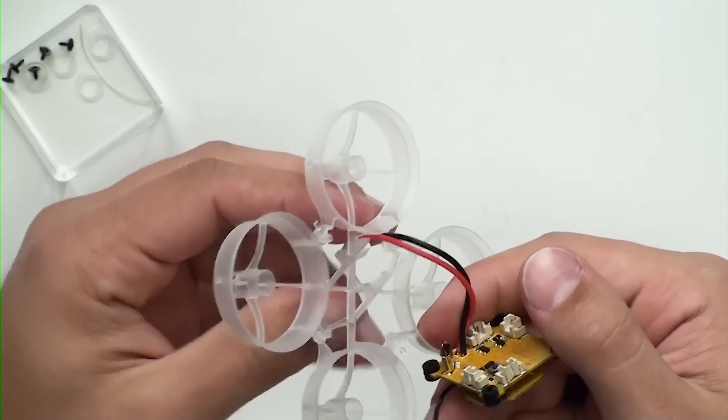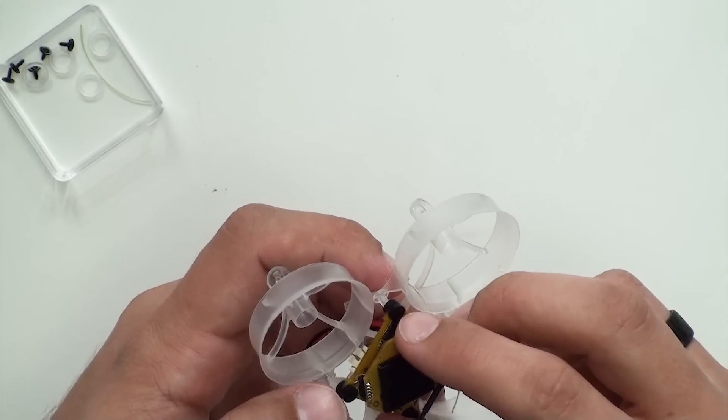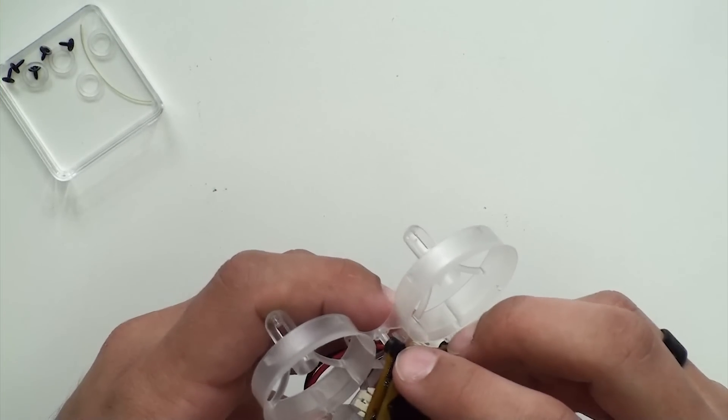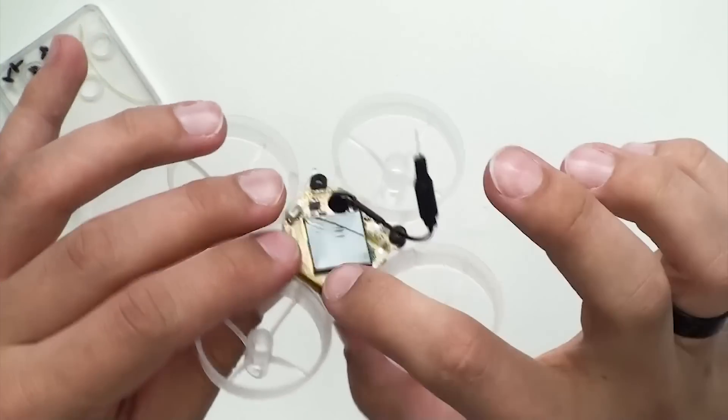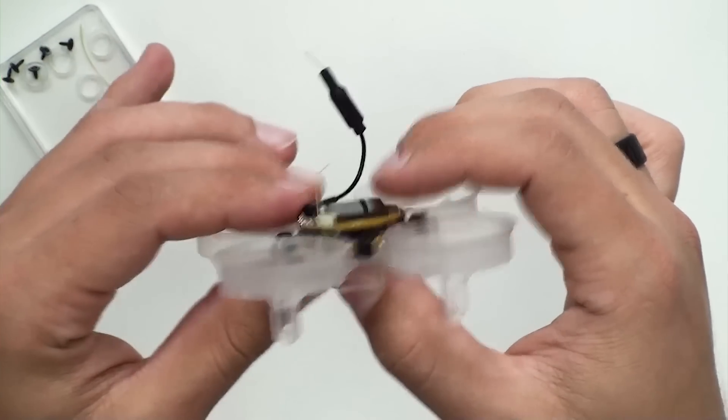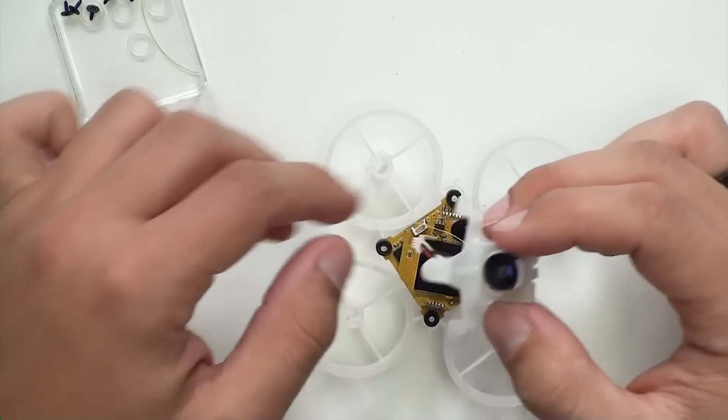Now fit the flight controller grommets onto the little slots. Make sure everything is nice and even and level on all sides of the frame. Now we can reinstall the camera back onto the flight controller.